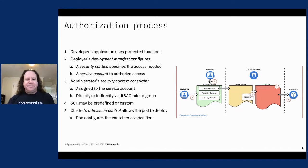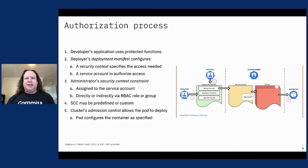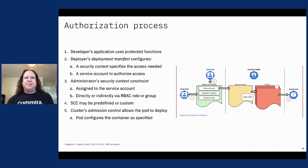That SCC is going to be assigned to the service account, either directly or indirectly via RBAC. Then when the scheduler wants to start the pod, admission control running in the cluster is going to decide whether or not that pod can be created and started. It's going to compare the security context to the security context constraints and decide whether or not to allow the pod to be created. When the pod is created, it will configure the container as described by the security context, thereby allowing the application to access those protected Linux functions.